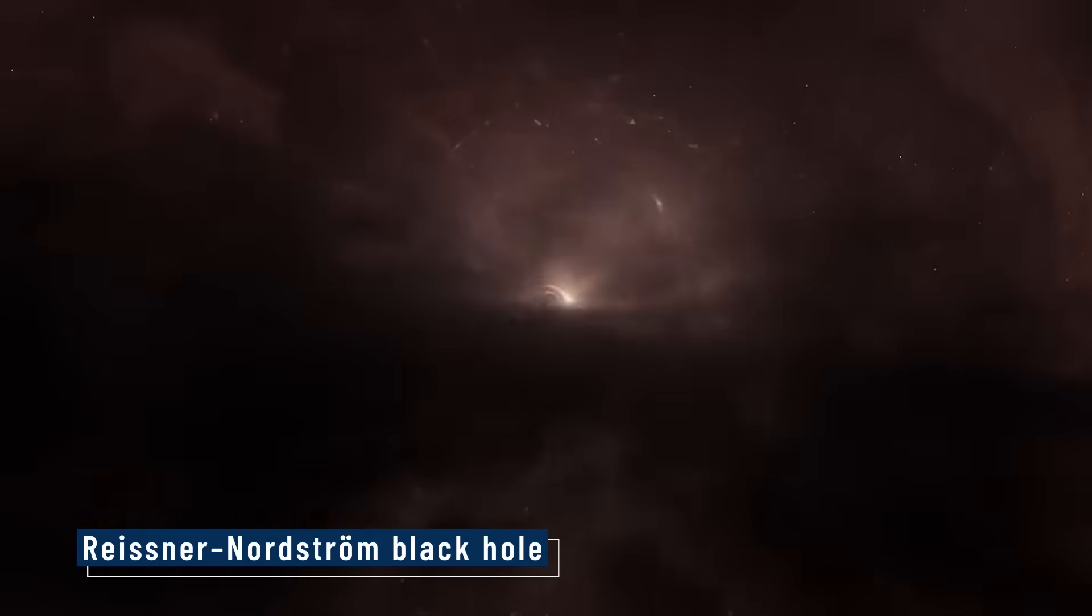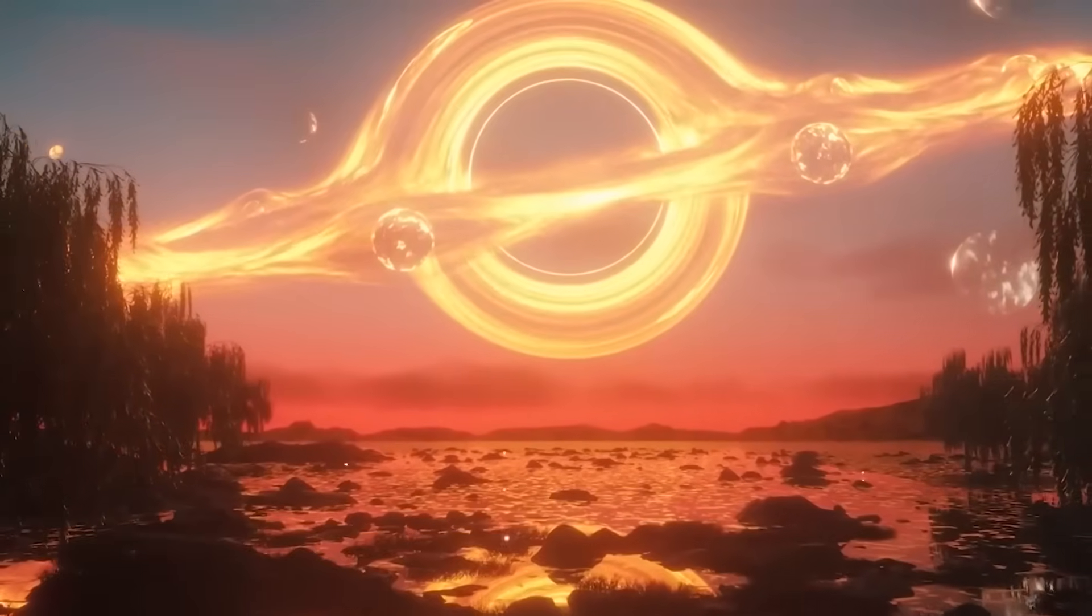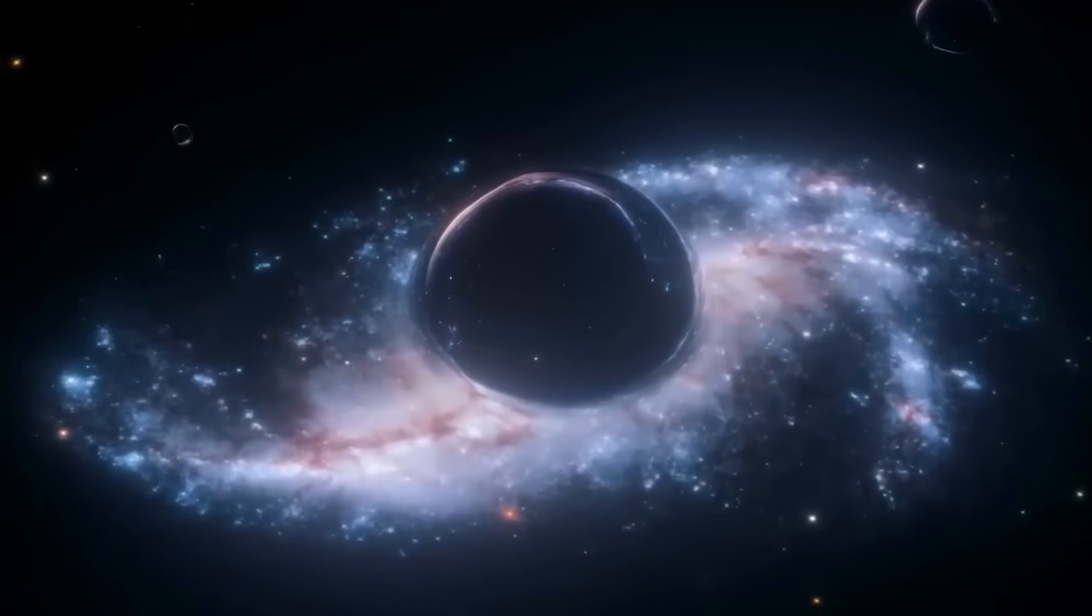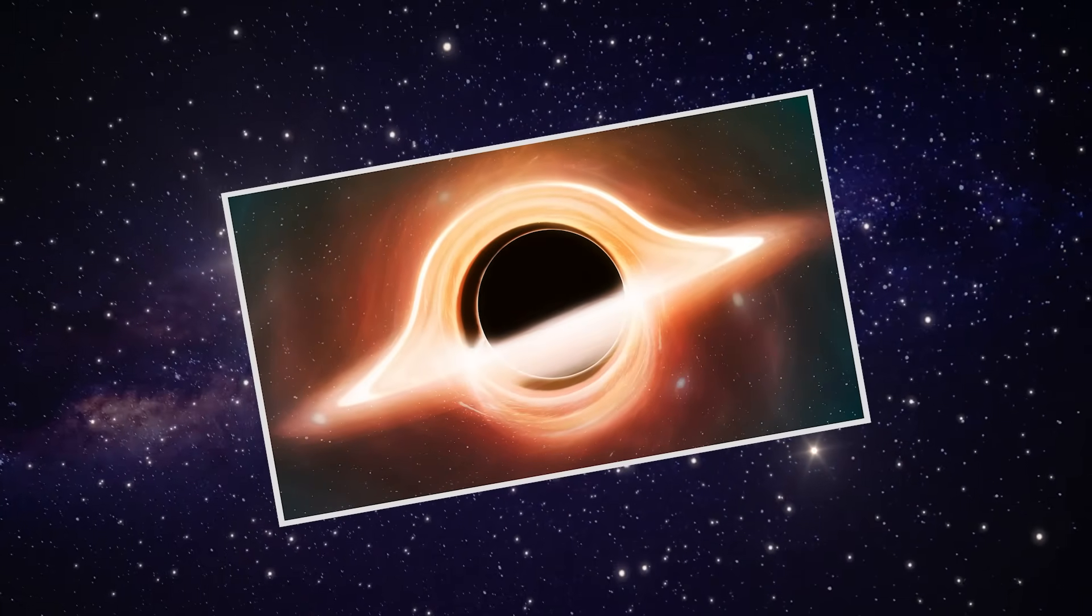A Reissner Nordstrom black hole has electric charge, but no spin. It has not one, but two horizons. The outer one, event horizon, and an inner one called the Cauchy horizon. What lies between them is still a mystery.